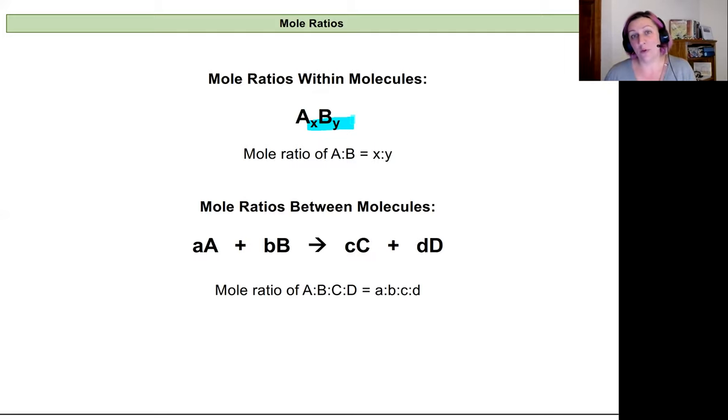The other kind of mole ratio exists in chemical equations. These are the coefficients added in front of each chemical formula for reactants and products. They tell us the ratio of moles that will react together or be produced within the reaction. If I know I have A moles of A, then I can predict the number of moles of C I'll produce. This is primarily how we'll use mole ratios in stoichiometry problems.